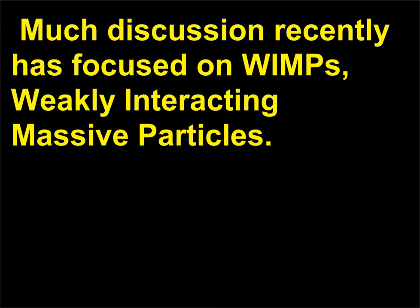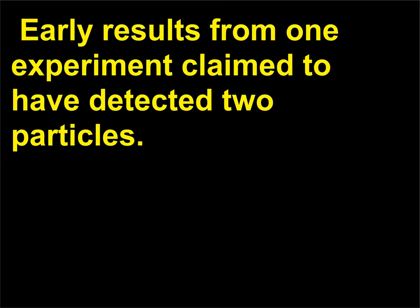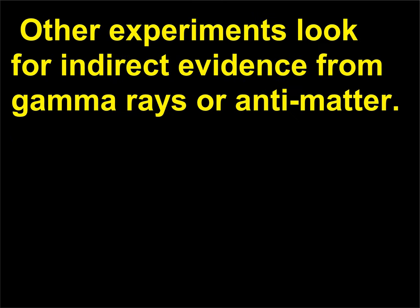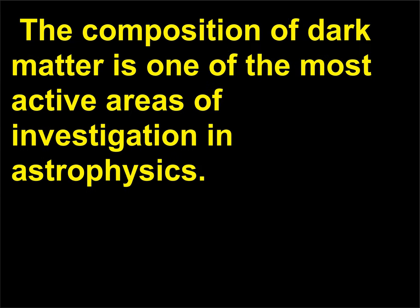Much discussion recently has focused on WIMPs — weakly interacting massive particles. If they exist, they would be passing through Earth, and so several experiments are underway to detect them. Early results from one experiment claim to have detected two particles. Other experiments look for indirect evidence from gamma rays or antimatter. One result claimed to have found an excess of positrons, but not antiprotons. The composition of dark matter is one of the most active areas of investigation in astrophysics.